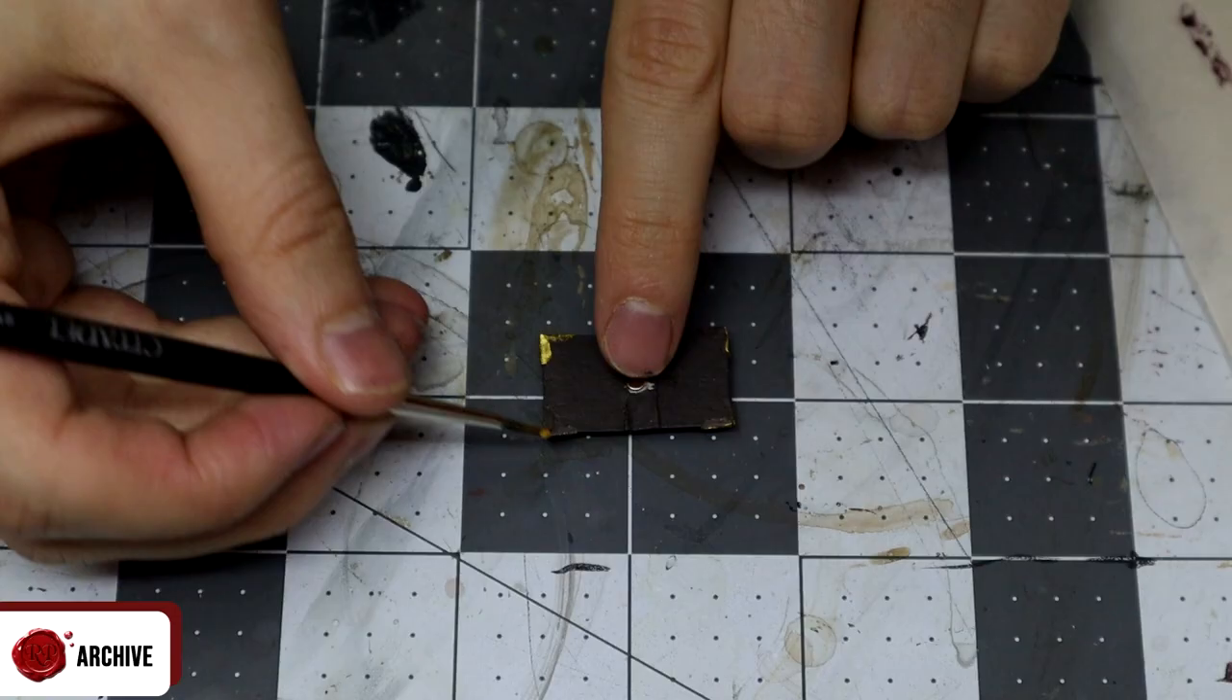Then I just painted the outside cover in more GW Dryad Bark, which I also used to base coat the corners before painting them in Vallejo Model Colour Gold.